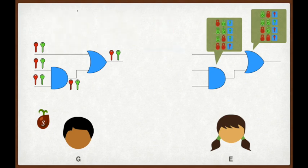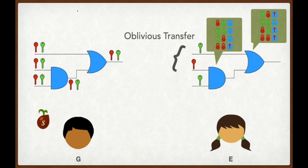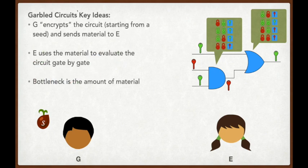To finish evaluation, we convey input keys to the evaluator E. From here, the evaluator can step through the circuit gate by gate, decrypting individual rows of each gate, and propagating input keys to output keys. To reiterate, the bottleneck in this entire process is the amount of material that is sent from G to E.